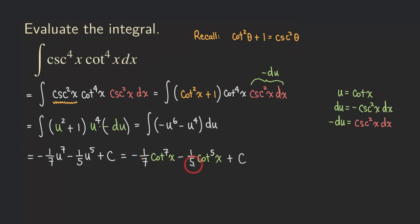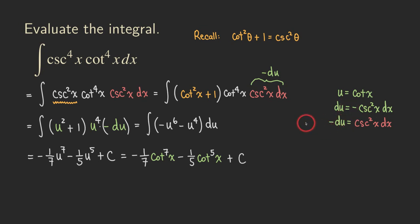If you imagine replacing the cosecant and cotangent functions with the secant and tangent functions respectively, the whole process is exactly the same. The only difference is a minor detail: when you let u equal tangent, you get secant squared x dx without the minus sign. Everything else is almost exactly the same.